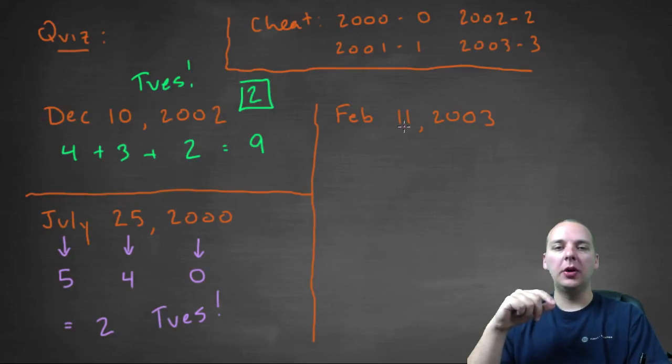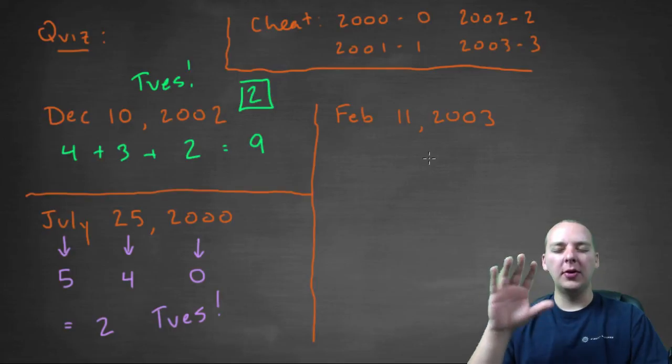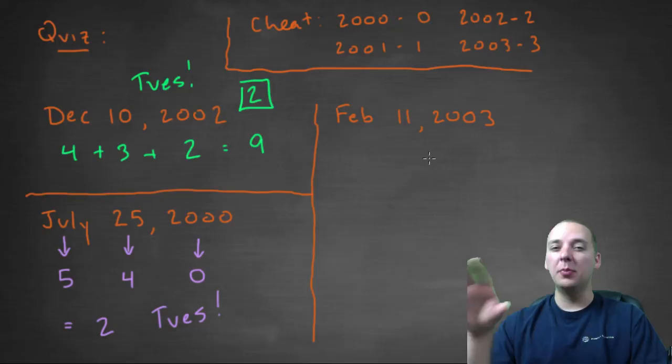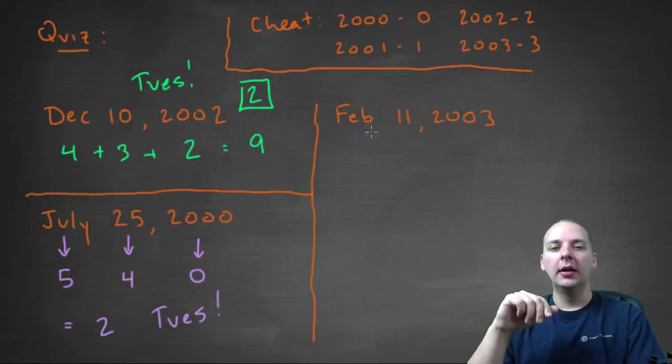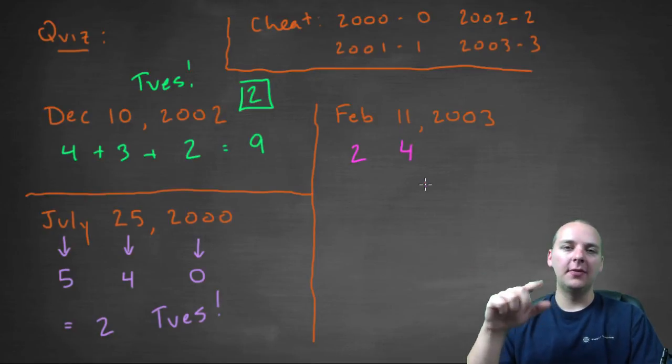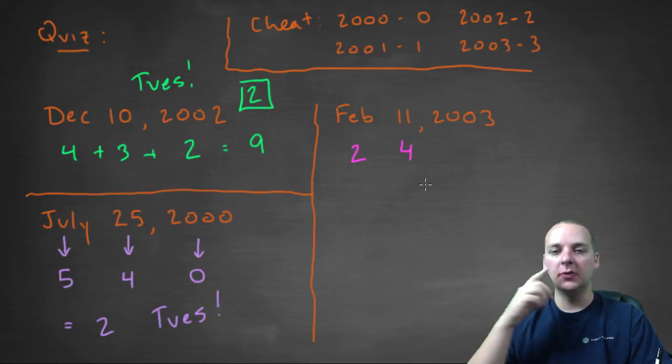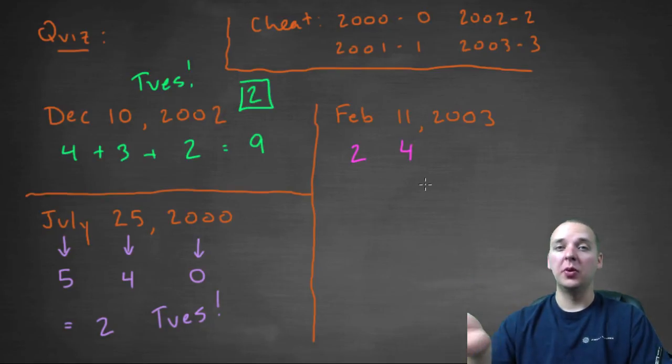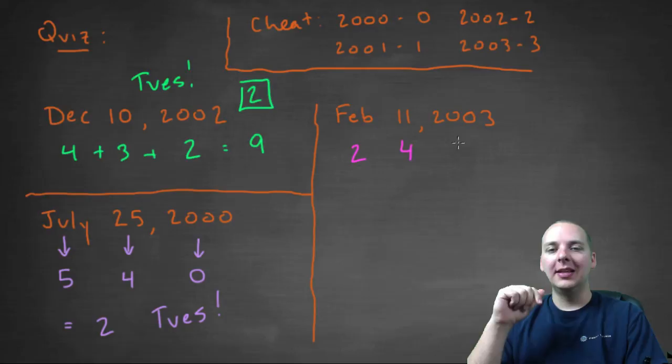Alright, last one, February 11th, 2003. February, if I think of my month codes, I think of my mnemonic devices, February was the second month, that's how I did that mnemonic. So February's month code is 2. The day code for 11 is a 4, because 11 modulo 7 is 4. Divide 7 into 11, and it leaves you with a remainder of 4.